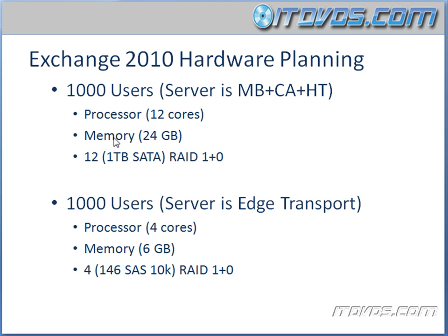The next thing is memory. About 24 gigs should handle this server just fine, and 24 gigs probably also sounds like a lot — but again, we're talking about three different roles. Your mailbox role by far is going to use the most memory, because memory is used to cache the mailbox database. If we cut it close on memory, it's actually going to increase the I/O on our disk subsystem because we're not going to be able to cache as much of the mailbox database, so it's going to hit the disk.